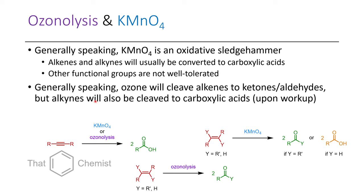Generally speaking, if you use ozone, you will cleave alkenes to ketones or aldehydes. Here we can see that if we have a disubstituted or tetrasubstituted alkene, depending on what the Y groups are, we'll get aldehydes or ketones. However, with potassium permanganate, we'll usually get ketones and carboxylic acids, or just carboxylic acids in the case of alkynes.